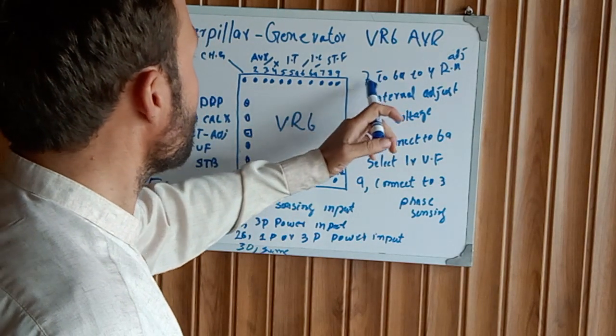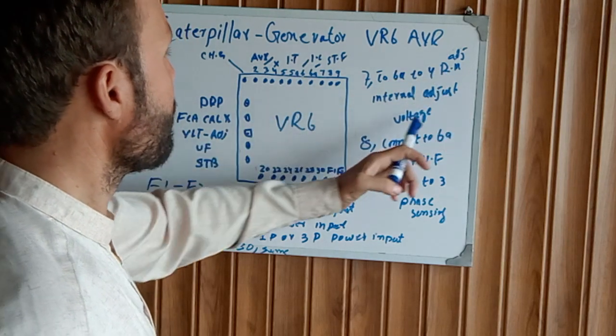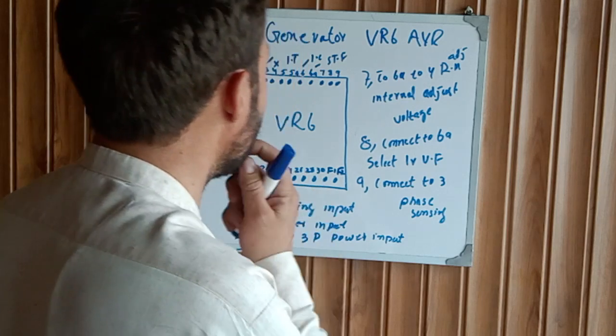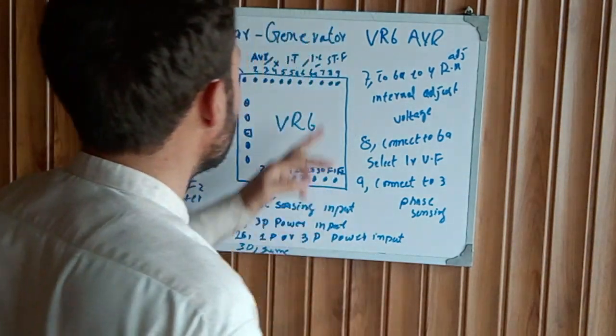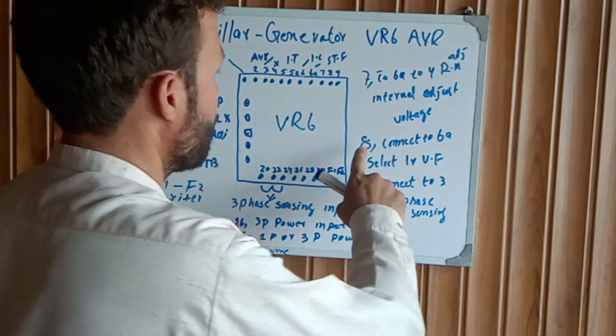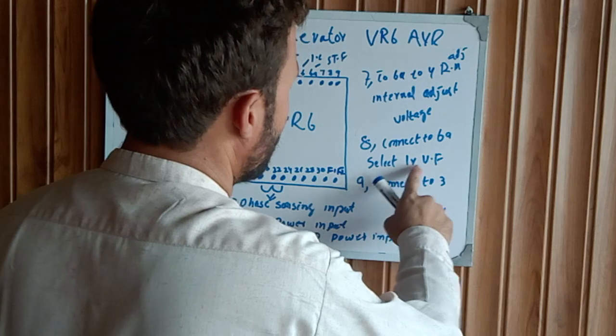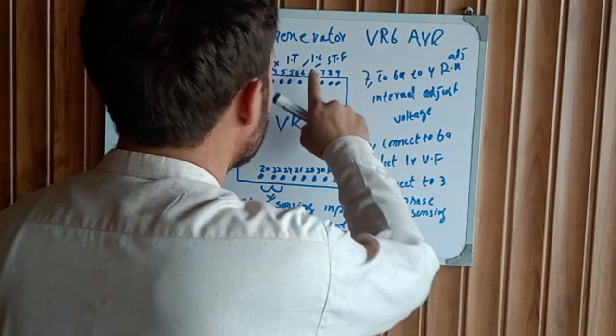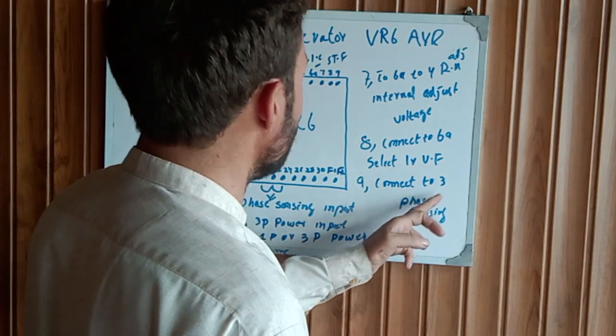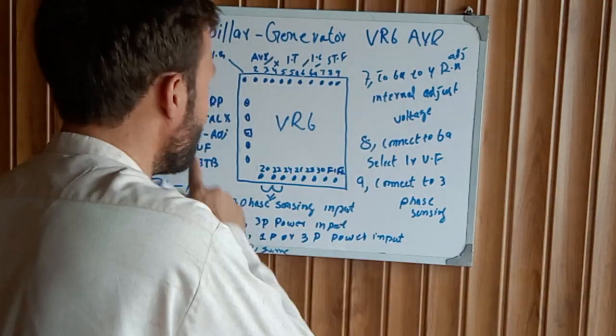7 is connected to 6A to 4 for internal adjustable voltage. 8 number is connected to 6A select 1 volt under frequency to sense the frequency voltage. 9 is connected to 3-phase sensing.